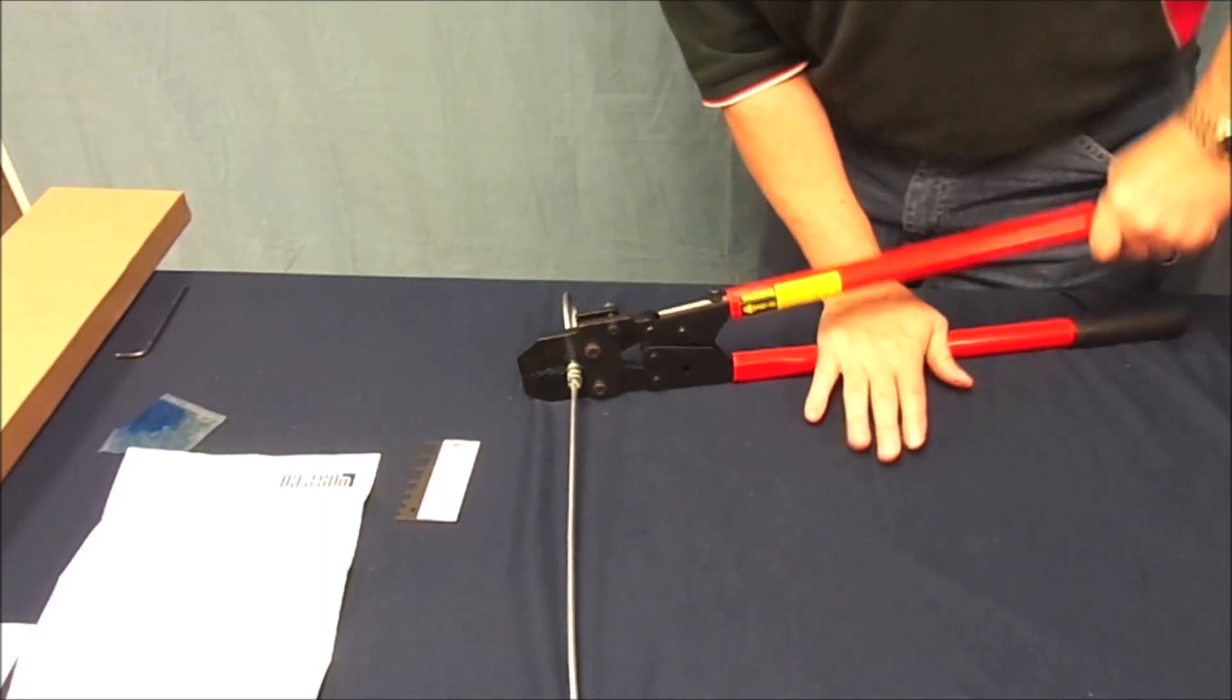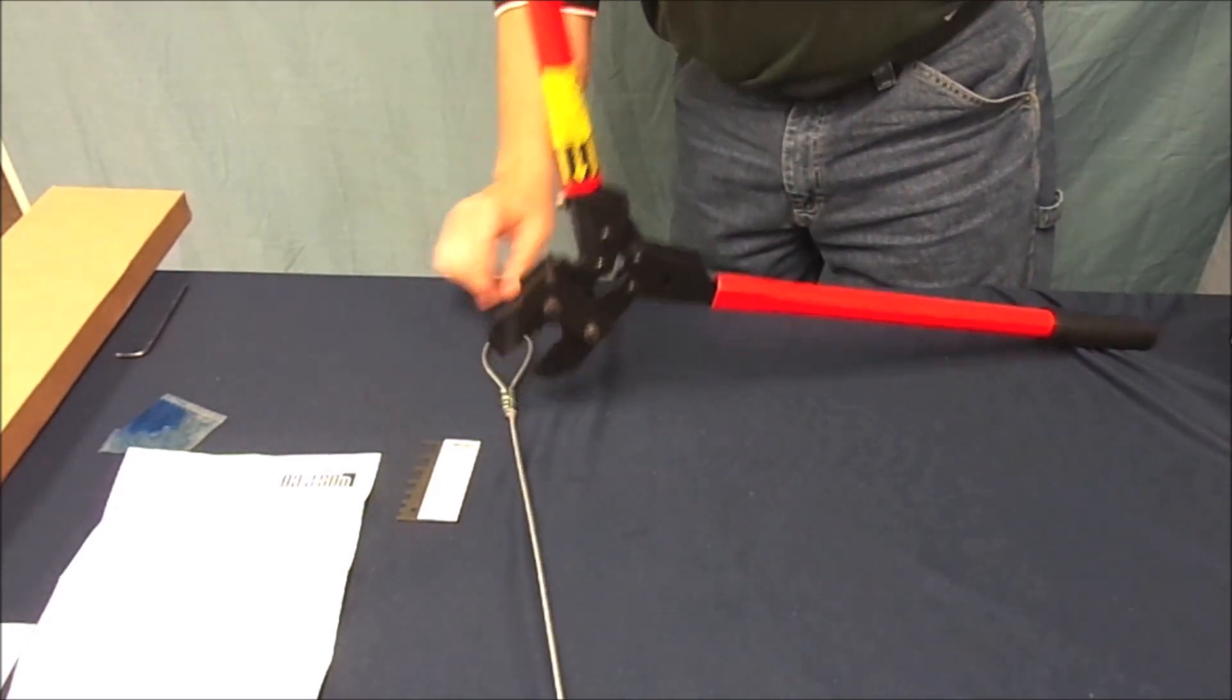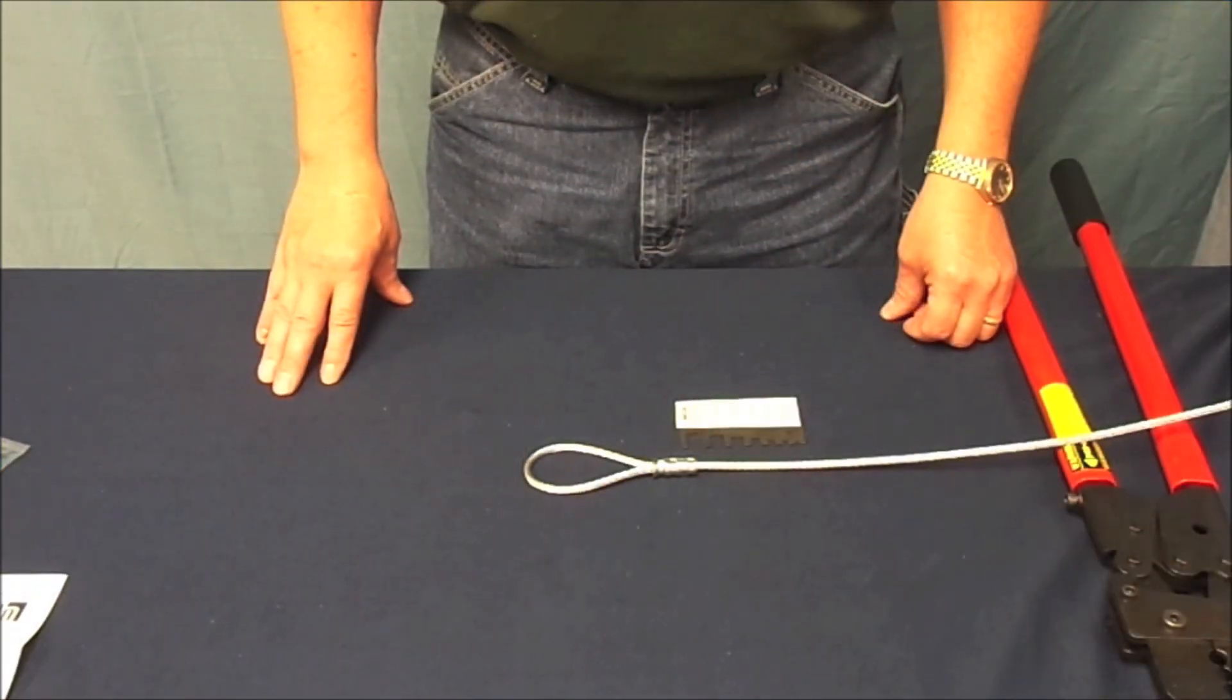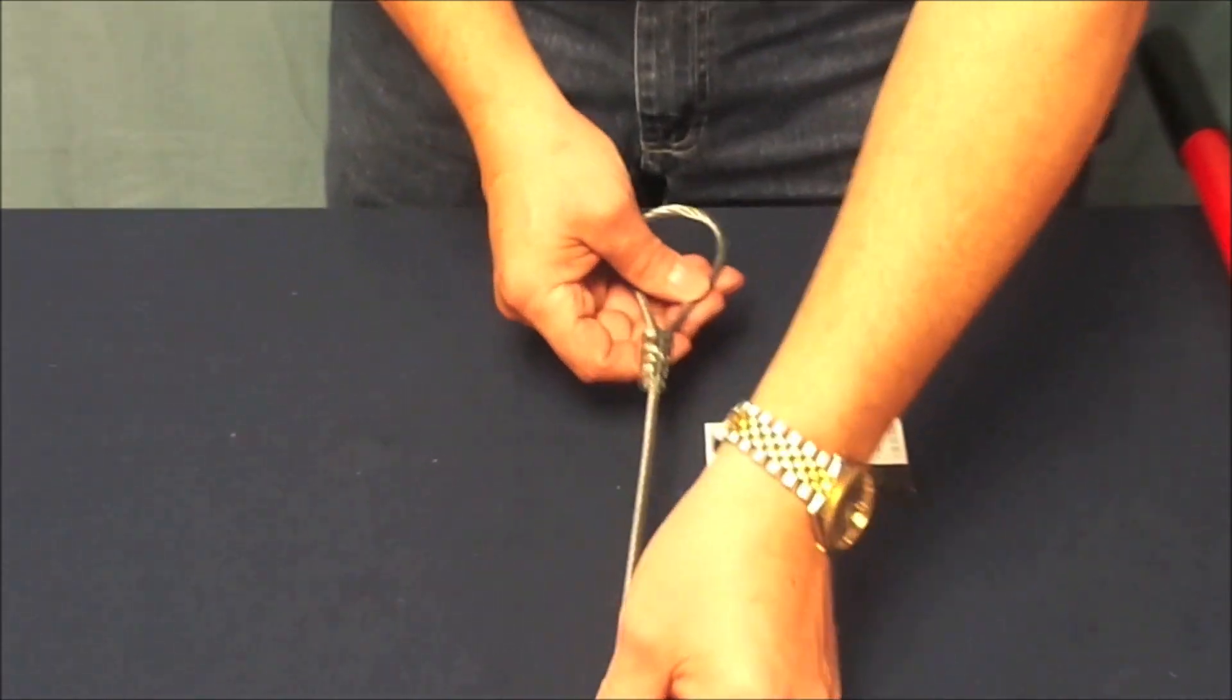Upon completion check each compression with the go gauge. This properly swaged fitting will generate full breaking strength on the cable.